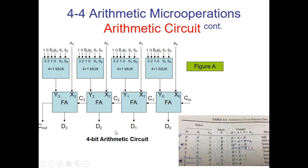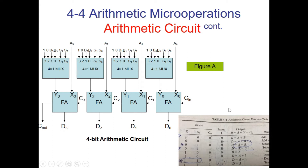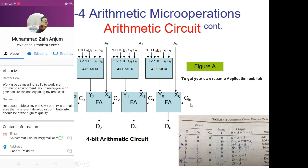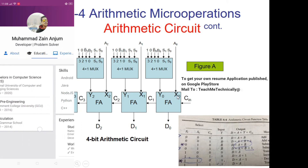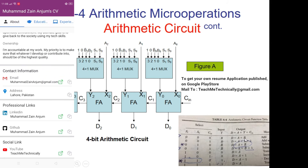Down here we have our 4-bit adder implemented. We are going to verify that for each input we produce the correct output. When selection bit is 0 0 and carry input is 0, the MUX passes the value of B, so B0, B1, B2, B3 come into the adder alongside A0, A1, A2, A3 with carry input 0. The full adder computes A plus B.